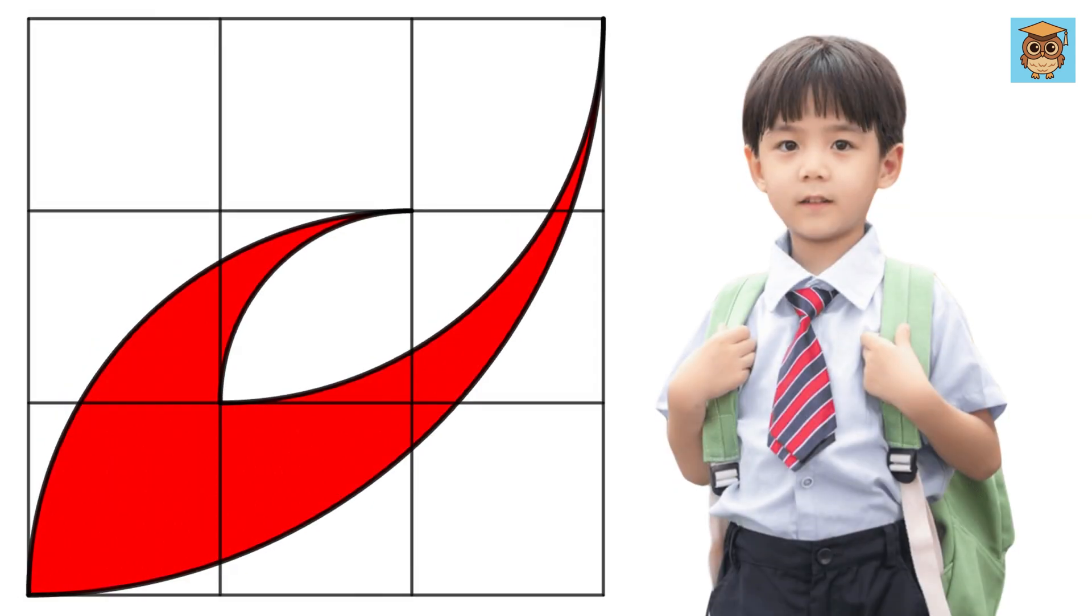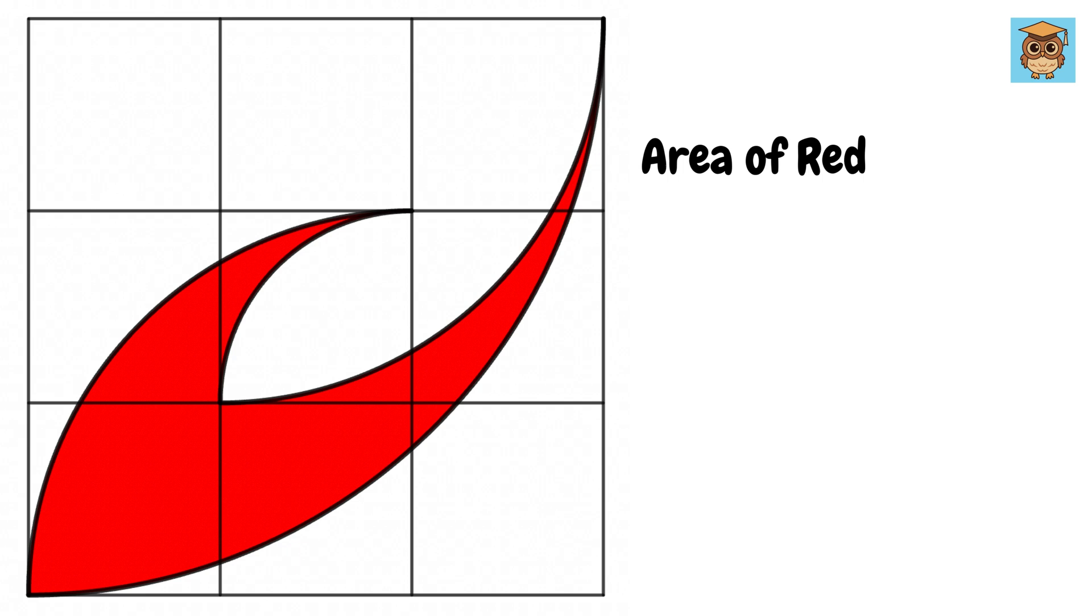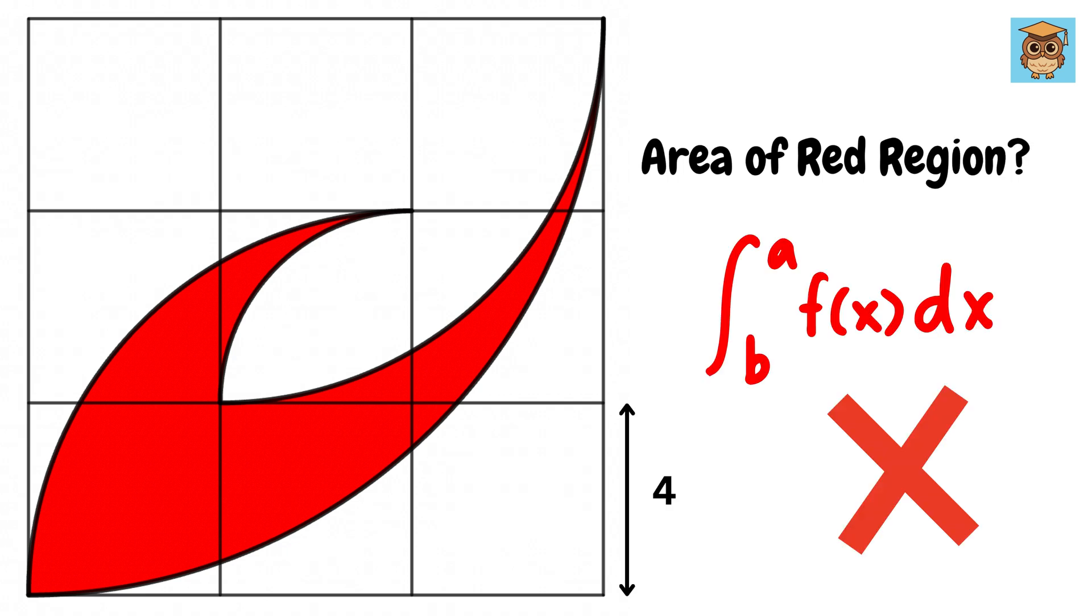Singapore primary students were asked such a difficult question. You have to find the area of this red region given the length of this square grid as 4. You are also not allowed to use integration. Can you solve it?